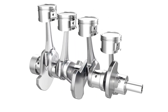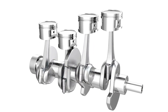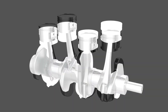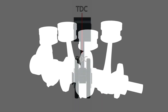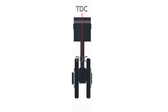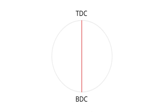The crankshaft is rotated 360 degrees when the up and down moving piston transmits the power to it. The topmost position of the piston is TDC or top dead center, and the bottommost position of the piston is BDC or bottom dead center. Let's understand the different processes involved at different piston positions.